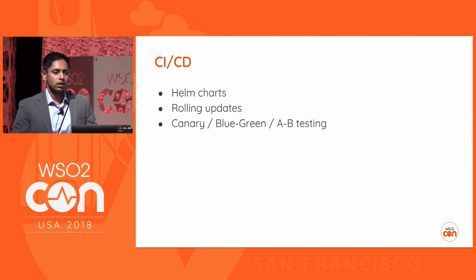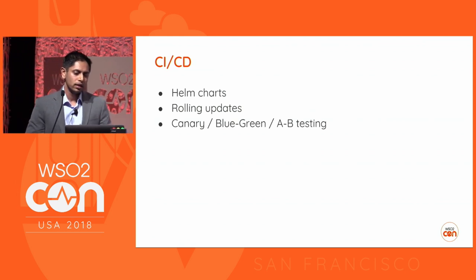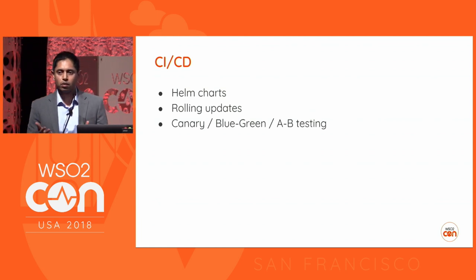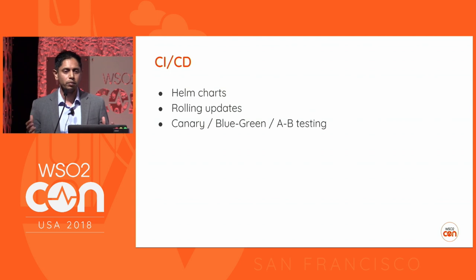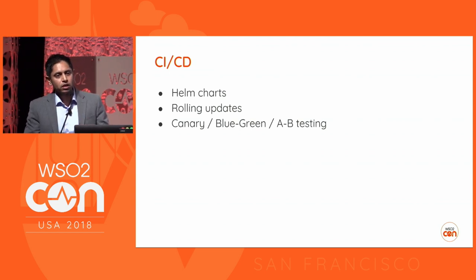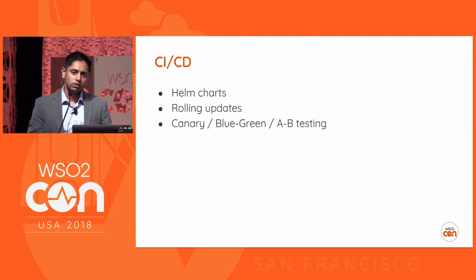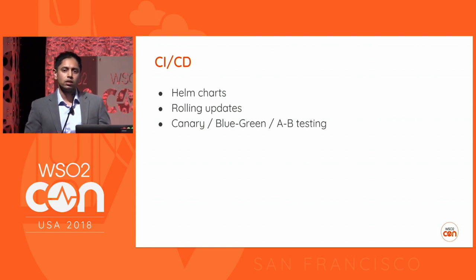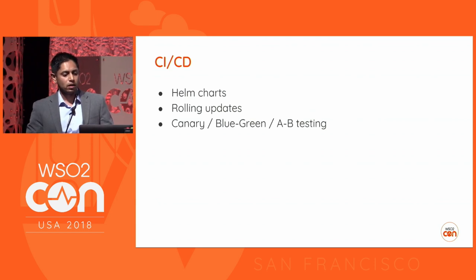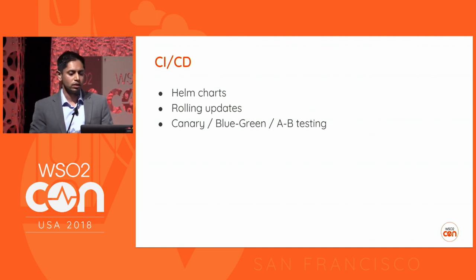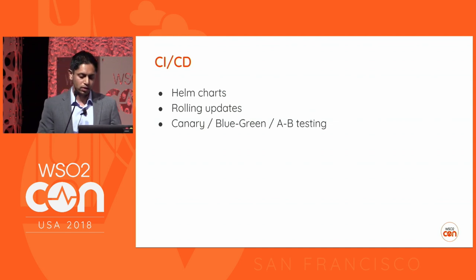The application developer doesn't have to know anything about metrics collection. On the continuous integration and continuous deployment cycle, there are multiple technologies. You can use Helm charts to create a complete version deployment artifact. You can also do rolling updates. As a developer, you also get a chance to work with how your program behaves using a Canary deployment — you selectively send a percentage of traffic to a certain version of a service and gradually increase that load. Blue-green is where you have one deployment and switch over to another, and it also allows you to do A/B testing with ease.